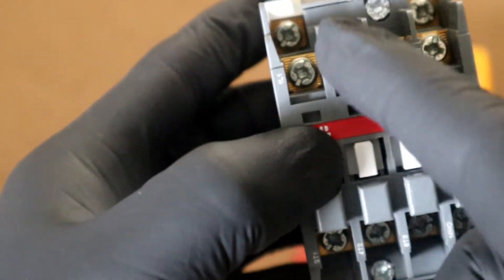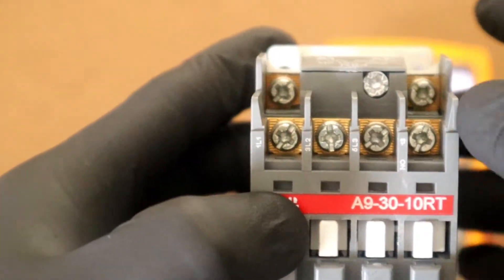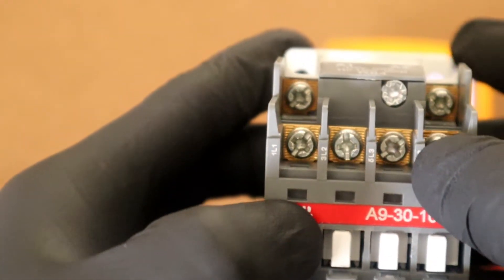This closes the path for current flow between L1, L2, L3 and so forth, all the way up to the normal open contact points.